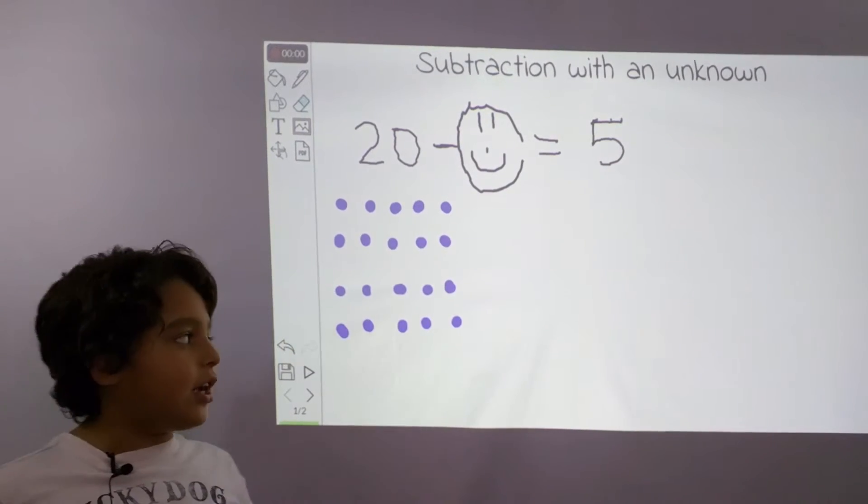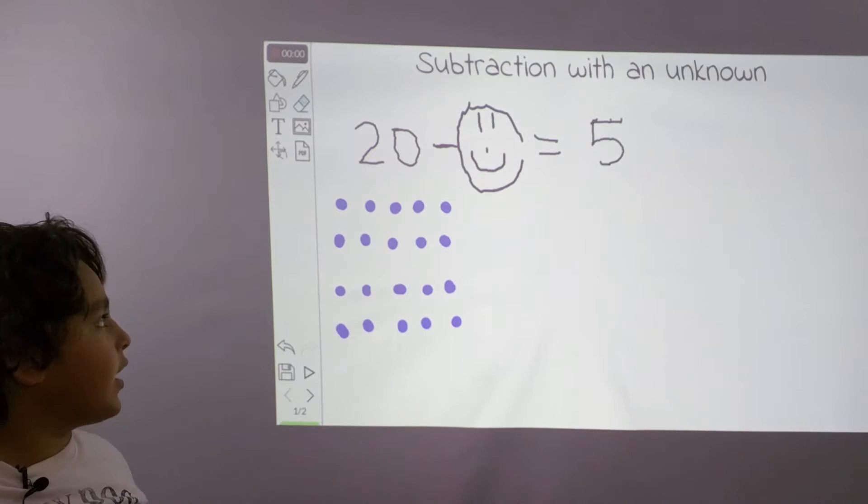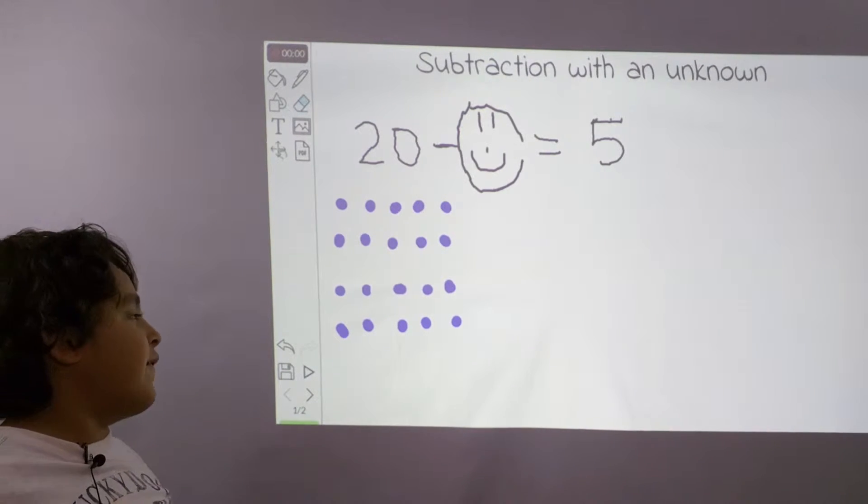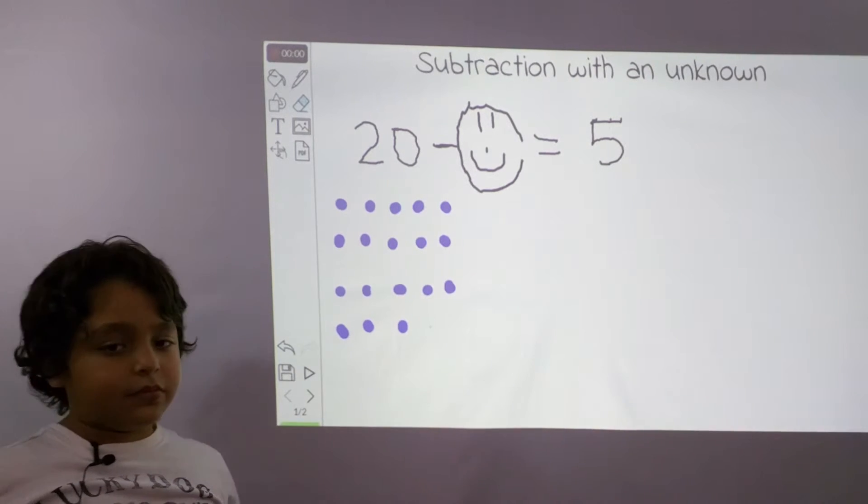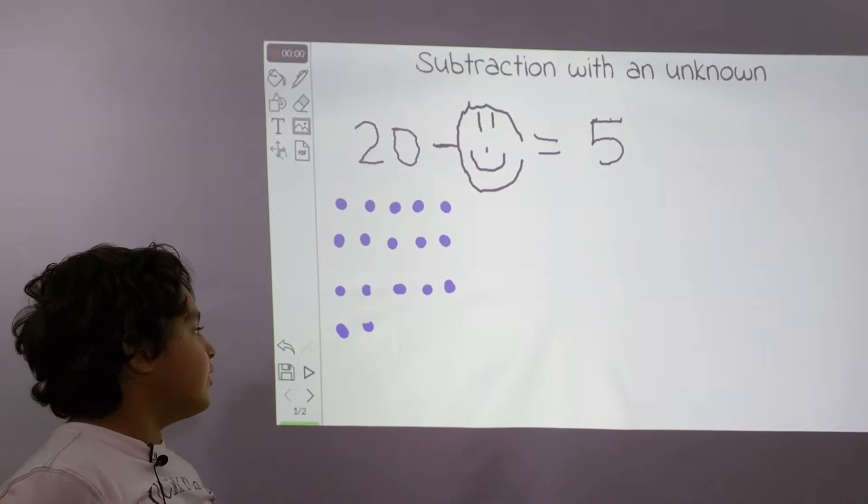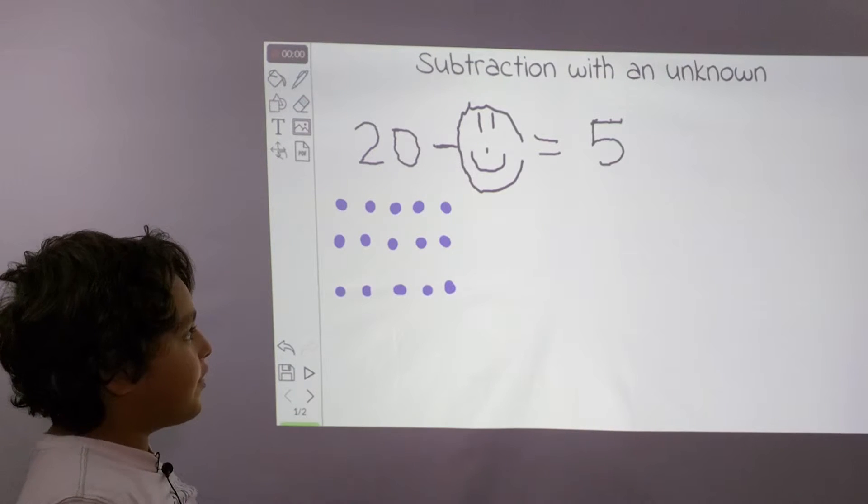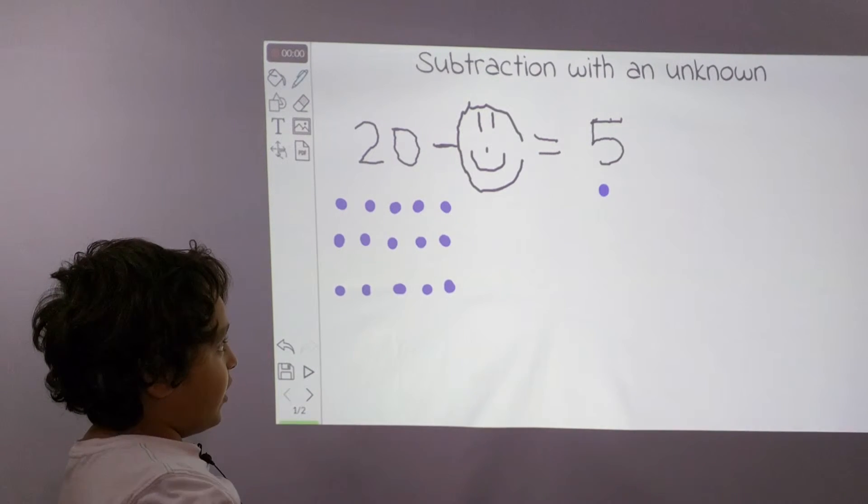So now we're going to figure out the answer that goes right there. So we have 20 dots right here in this area. And we're going to take away 5 and put the 5 dots under the 5. 1, 2, 3, 4, 5. And we're going to put those 5 dots under the 5.